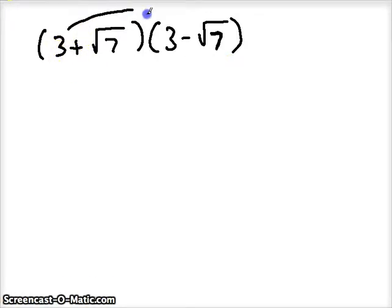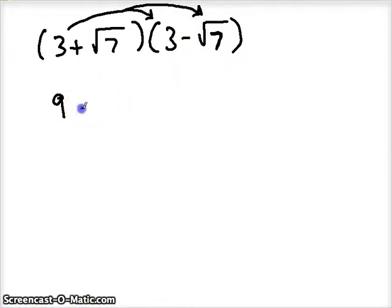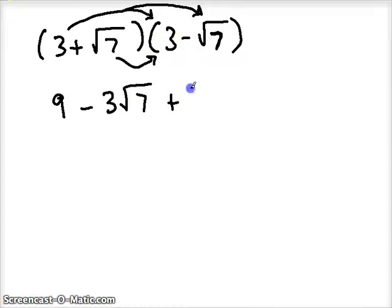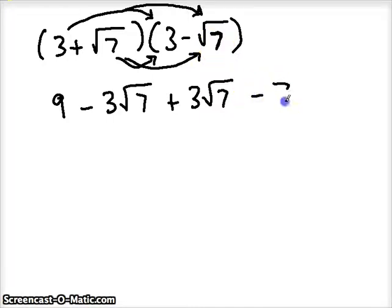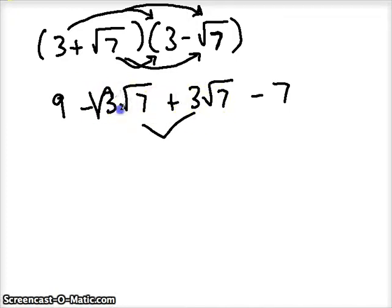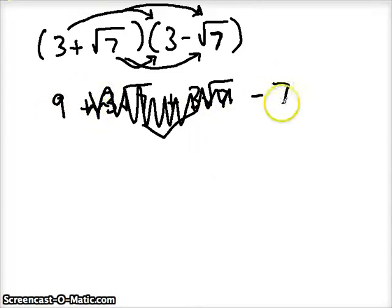Just like multiplying any binomials, we FOIL. First terms: 3 times 3 is 9. Outside terms: 3 times negative square root of 7 gives us minus 3 times the square root of 7. Inside terms: square root of 7 times 3 gives us positive 3 times the square root of 7. Last term: square root of 7 times negative square root of 7 gives us negative 7 — we're squaring a square root, so we're left with 7, but it's negative. When we combine the middle terms, they're opposites, so they cancel. We're left with 9 minus 7, which gives us positive 2. That's our final answer.